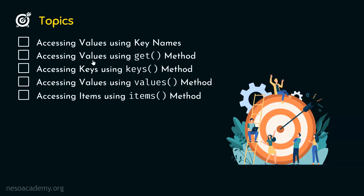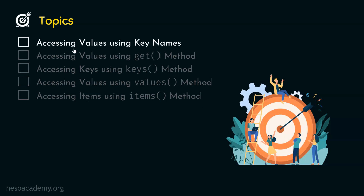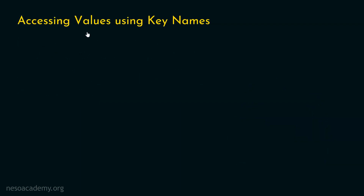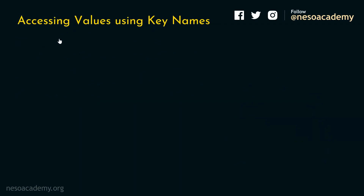Let's start with the first topic: accessing values using key names. How do we access values using key names? We can follow this syntax. First, we need to type the name of the dictionary, then within square brackets, we can specify the name of the key whose value we want to access.